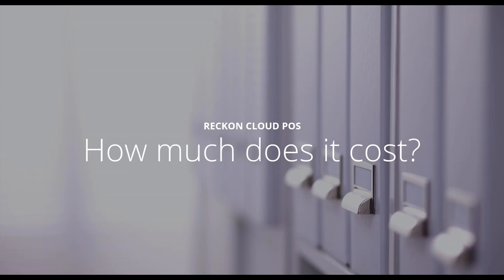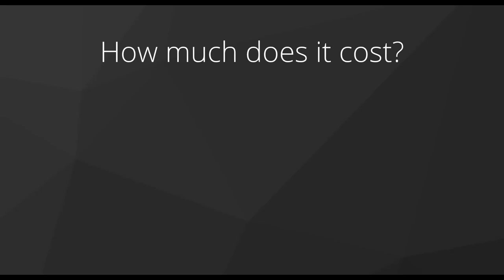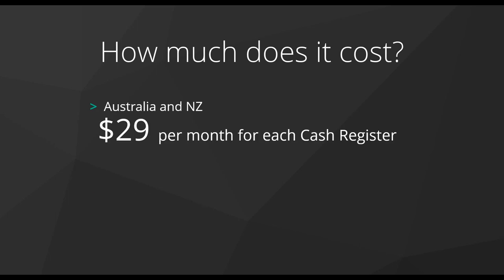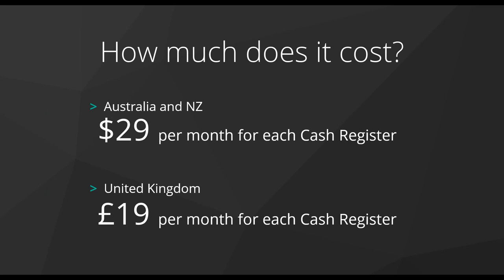Let's jump back into the slideshow. How much does it cost? You already saw it in the software — it's $29 a month per cash register, not per user. Any number of people can use a cash register, one at a time. That's for Australia and New Zealand. In the United Kingdom we charge 19 pounds per cash register. Thanks to Siobhan and David for their interest in the clothing, shoes, and size matrix — I'll get back to both of you via email and will probably send a general email to the entire group. Thanks everyone for your participation — we're very proud of what we've got here.